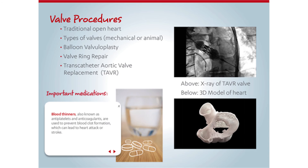The second is balloon valvuloplasty, where a surgeon will help open up a narrowed valve using a balloon. If the tissue supporting the valve is weakened and allowing regurgitation, they may be able to strengthen the tissue using a valve ring repair.